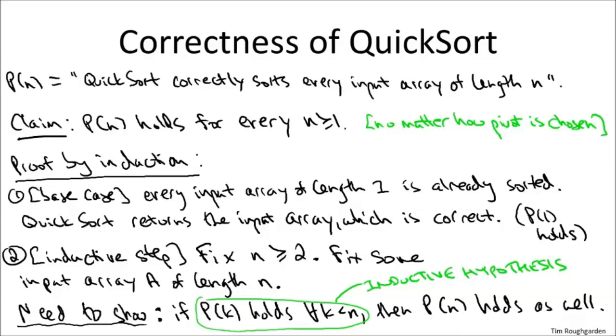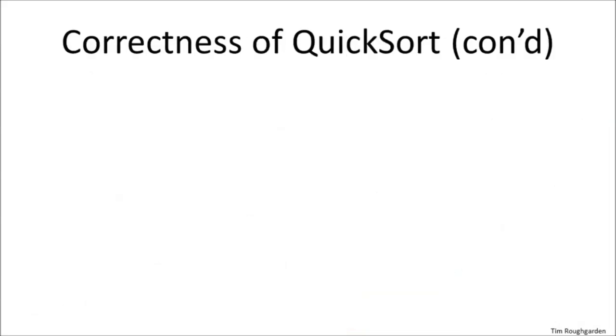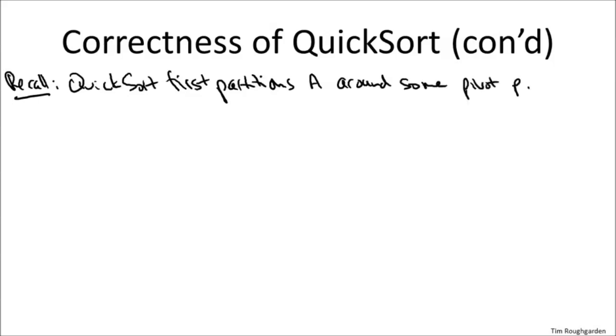So this is the point in the proof where we actually delve into how QuickSort is implemented to argue correctness. So recall what the first step of QuickSort is, it picks some pivot arbitrarily, we don't know how, we don't care how, and then it partitions the array around this pivot element p. Now as we argued in the video where we discussed the partition subroutine, at the conclusion of that subroutine, the array has been rearranged into the following format.